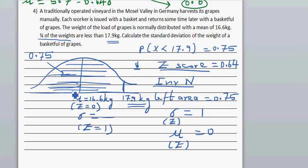Now let's use the formula. Z equals x minus mu divided by standard deviation. So 0.64... what is x? X is 17.9. So 17.9 minus 16.6. I'll put that in the bracket.